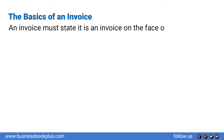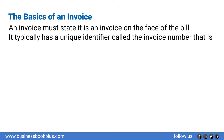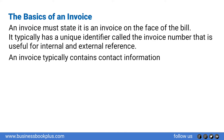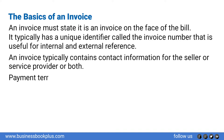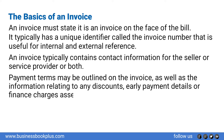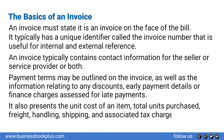The basics of an invoice: an invoice must state it is an invoice on the face of the bill. It typically has a unique identifier called the invoice number, which is useful for internal and external reference. An invoice typically contains contact information for the seller or service provider or both. Payment terms may be outlined on the invoice, as well as information relating to any discounts, early payment details, or finance charges assessed for late payments. It also presents the unit cost of an item, total units purchased, freight, handling, shipping, and associated tax charges, and outlines the total amount owed.